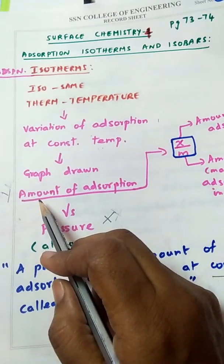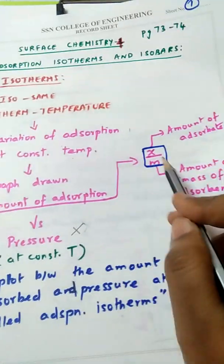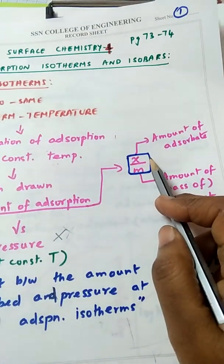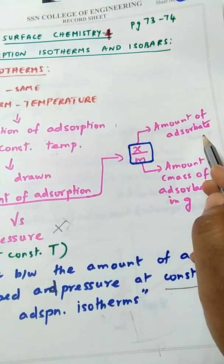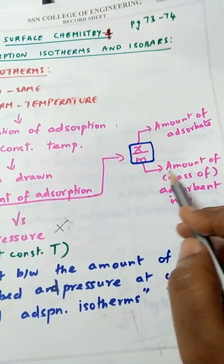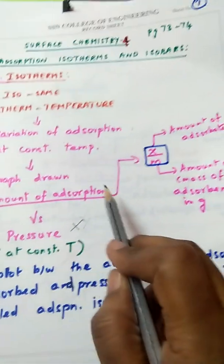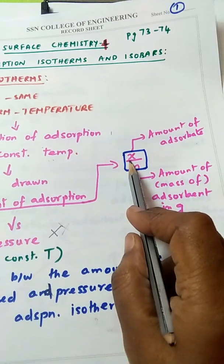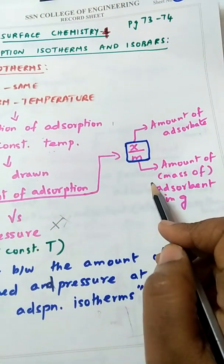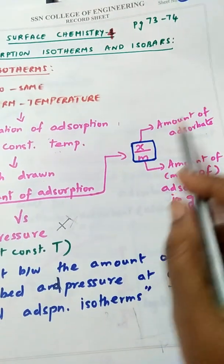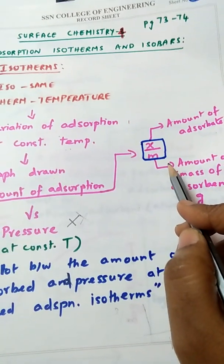You may have a question: how do you calculate the amount of adsorption? The amount of adsorption can be calculated using the value x/m, where x is the amount of adsorbate and m is the amount of adsorbent. This means the amount of adsorption is defined as the quantity of adsorbate molecules adsorbed per unit gram of the adsorbent.